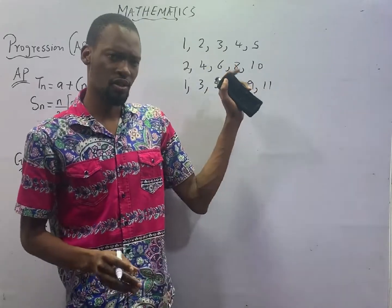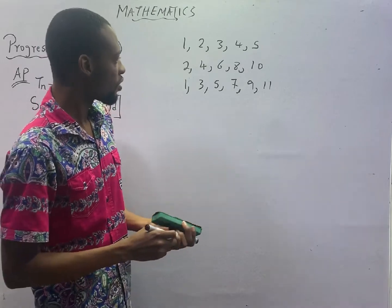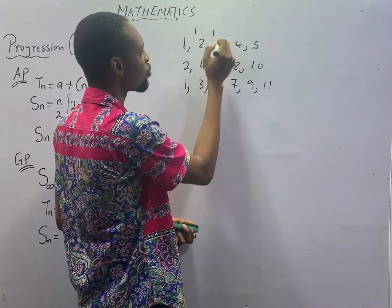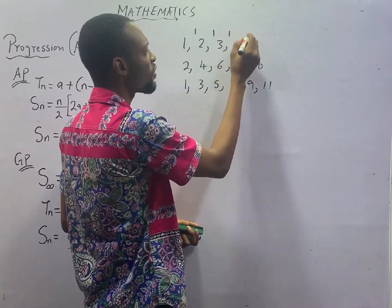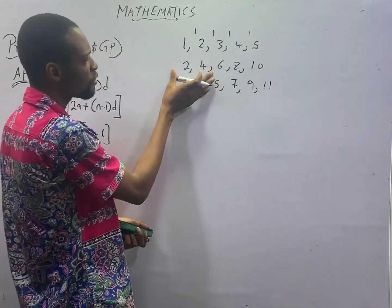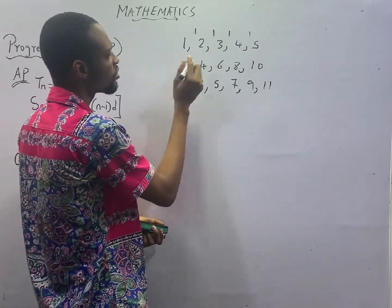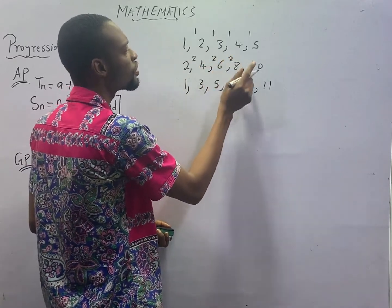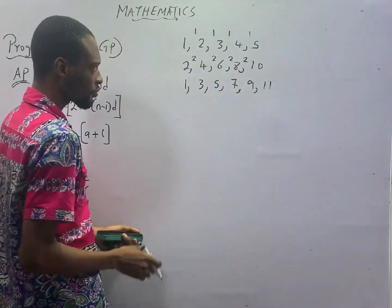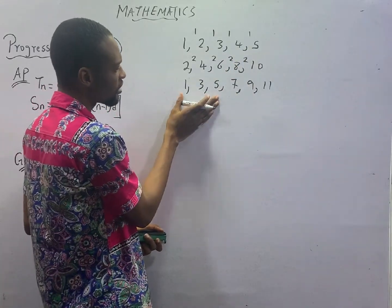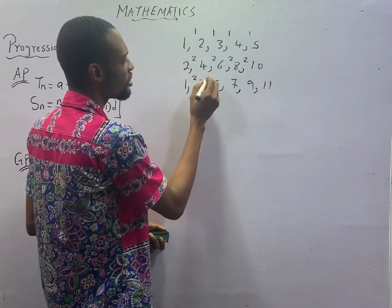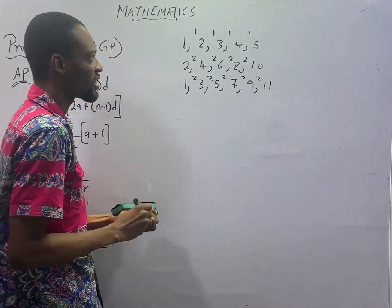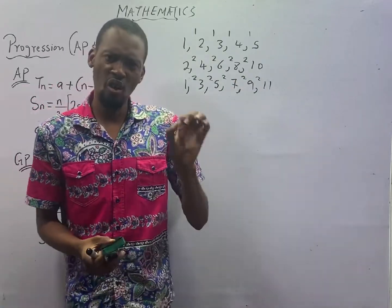Any of these three ways you choose, you will notice something. 2 minus 1 is 1, 3 minus 2 is 1, 4 minus 3 is 1, 5 minus 4 is 1. If you choose the second way: 4 minus 2 is 2, 6 minus 4 is 2, 8 minus 6 is 2, and 10 minus 8 is 2. If you choose the third way: 3 minus 1 is 2, 5 minus 3 is 2, 7 minus 5 is 2. Do you notice that there is a common difference?